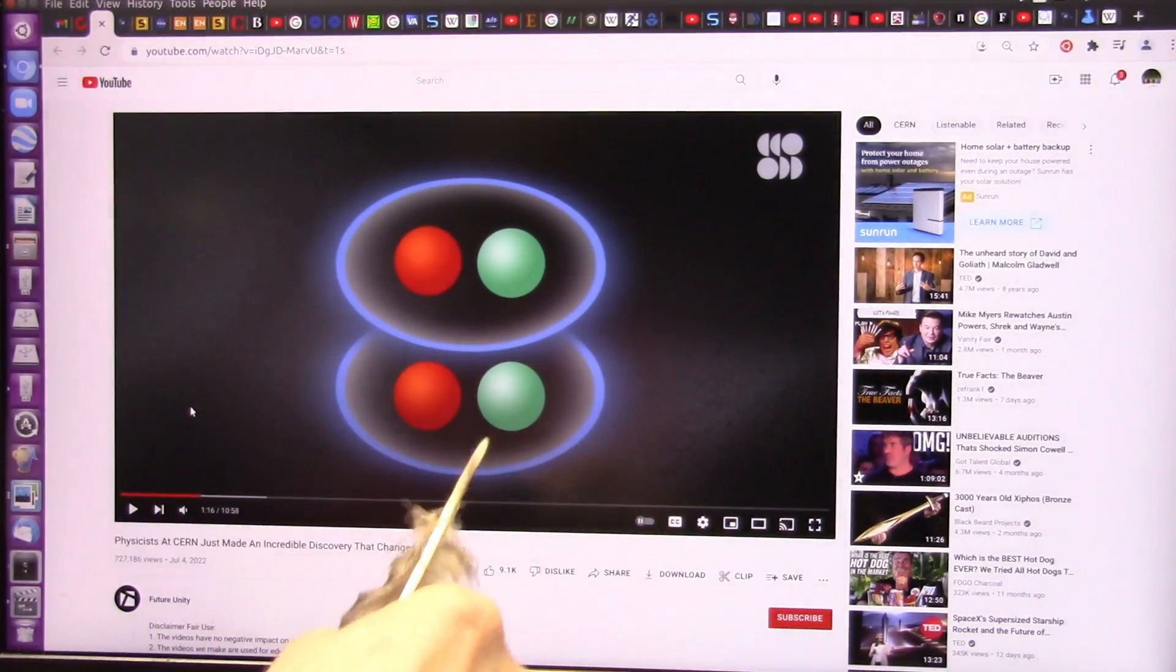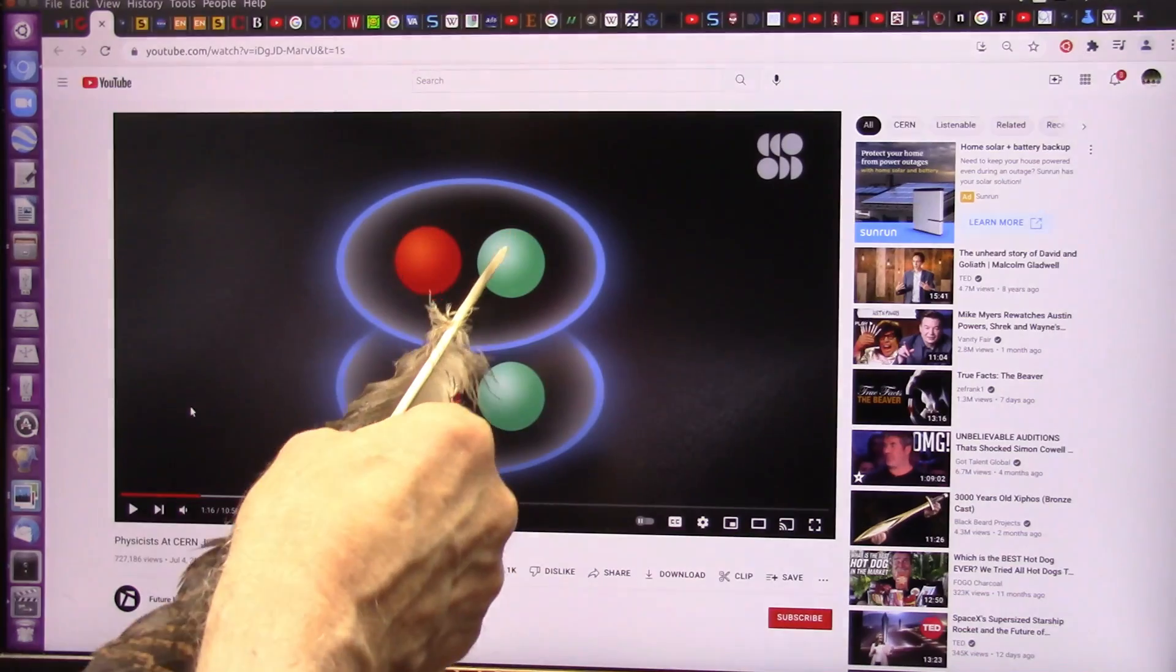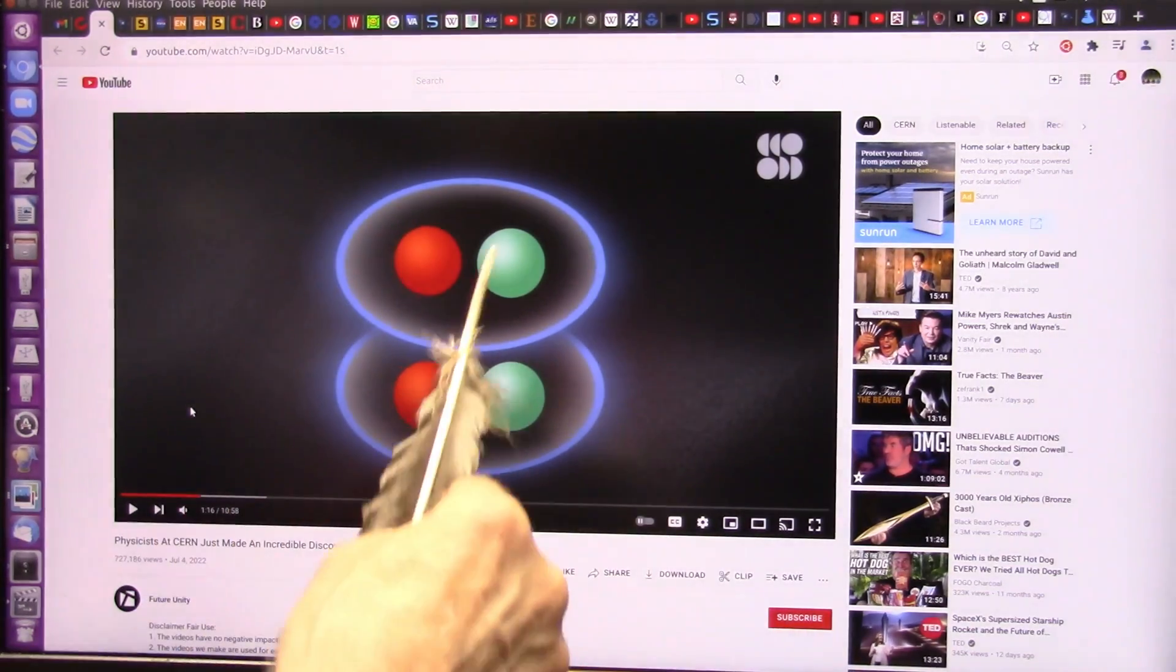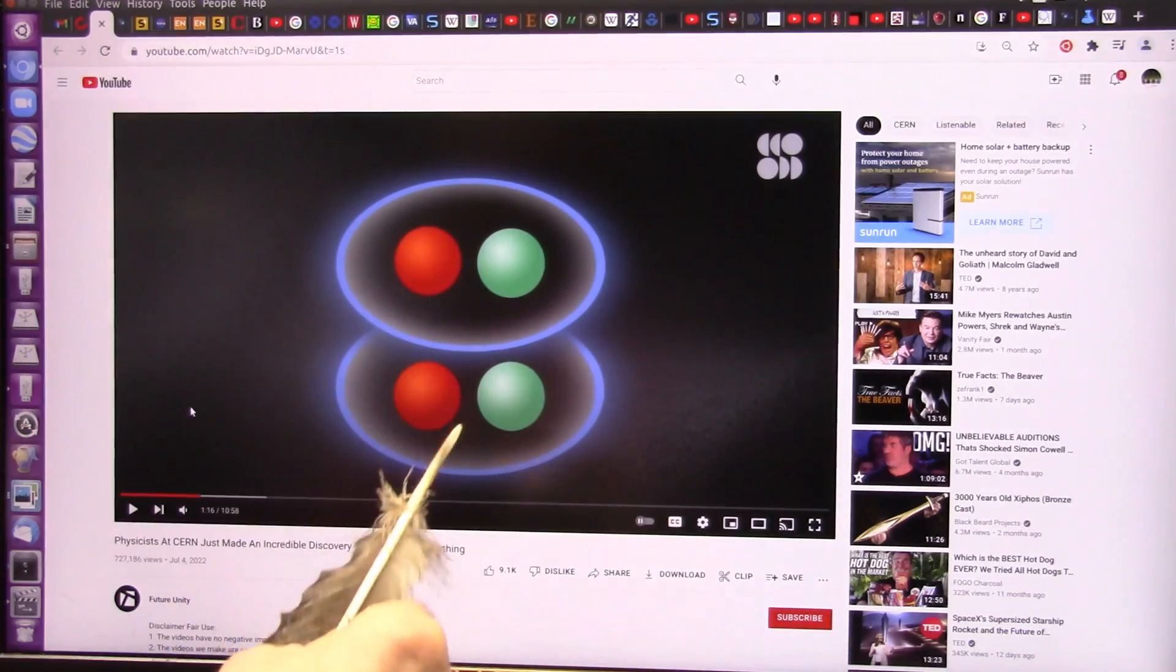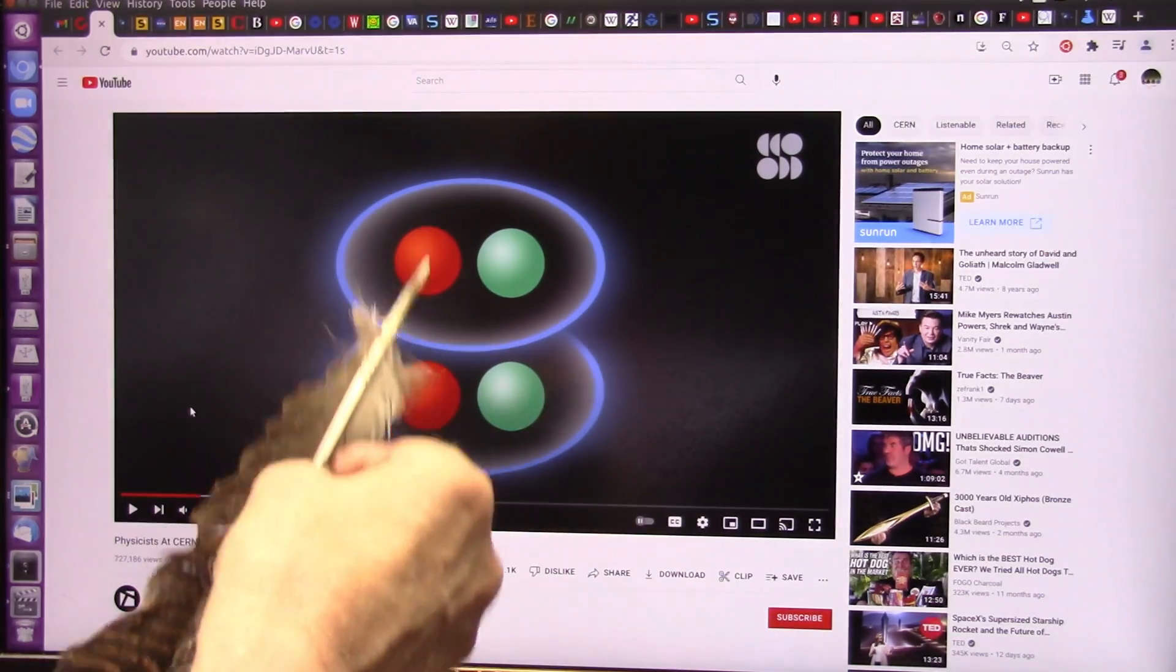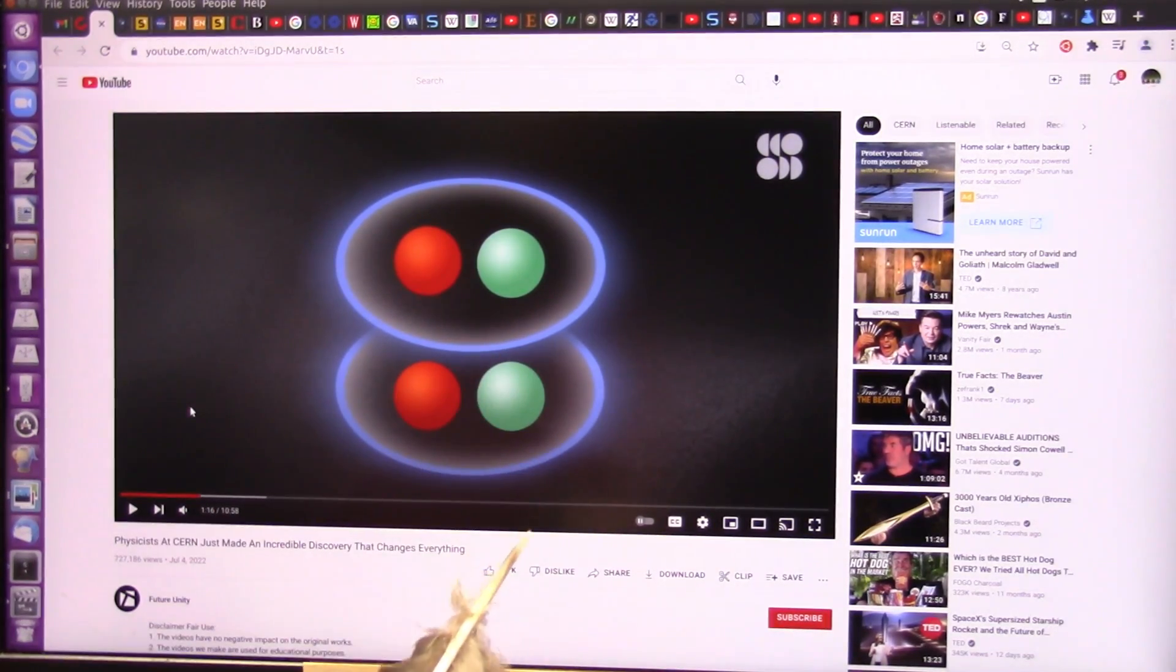All right. These particles are not in the correct configuration. There should be two of them this way and two of them that way, just like bar magnets back to back. However, they did find the tetraquark, they're calling it, which is nothing more than the dipole photon.